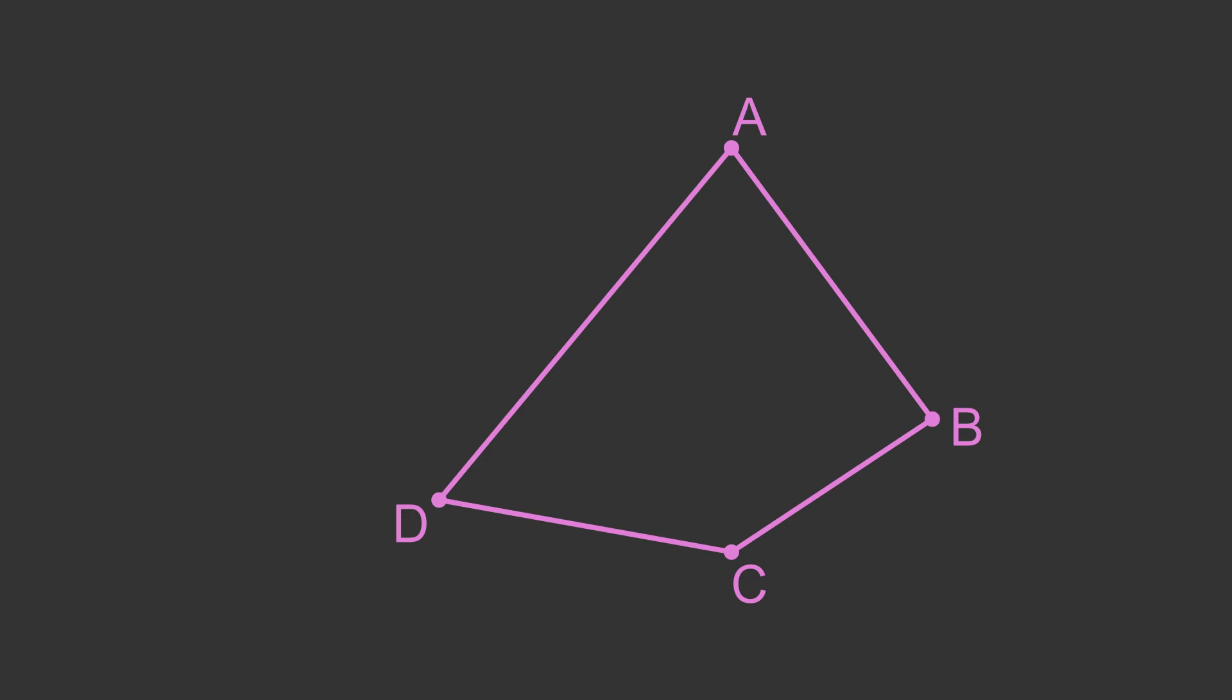A quadrilateral is cyclic if it is possible to draw a circle that passes through all 4 corners. The quadrilateral shown here is not cyclic. We can draw a circle that passes through points A, C and D, but that circle doesn't pass through point B. Alternatively we can draw a circle that passes through points A, B and C, but then that circle doesn't pass through point D.